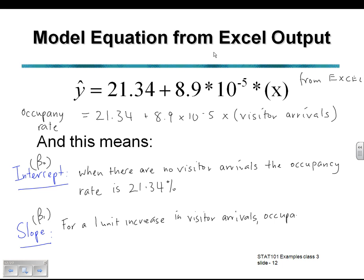So for every unit increase in X, we expect beta 1 increase in Y. For every unit increase in our visitor arrivals in this example, our occupancy rate increases by 0.0000089%.